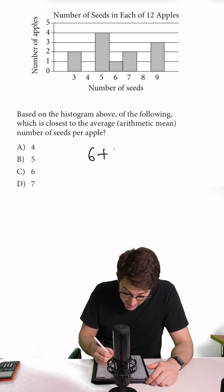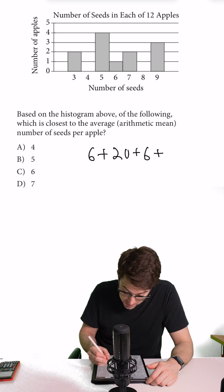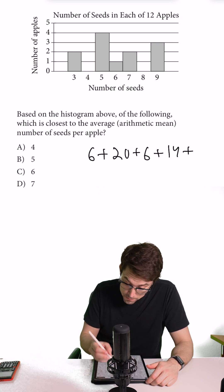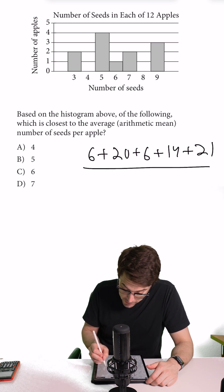We have five seeds in four of the apples. That's 20. We have six seeds in one of the apples. We have seven seeds in two of the apples. That's 14 total seeds. Then we have nine and then two. That gives us 21 seeds over here.